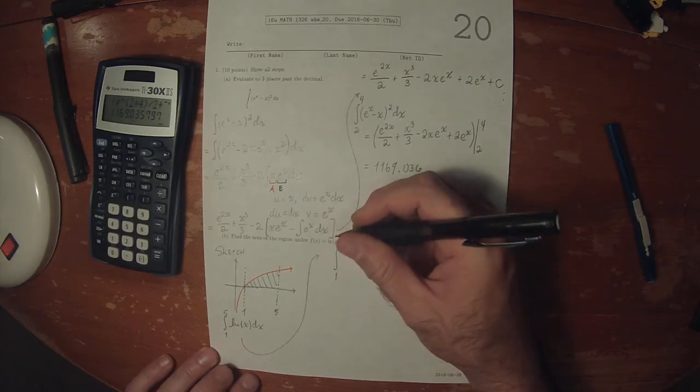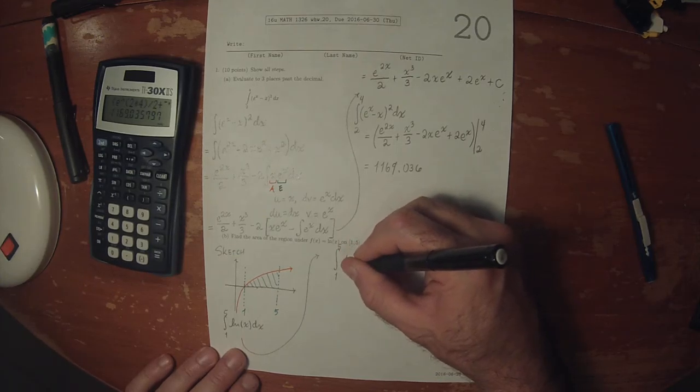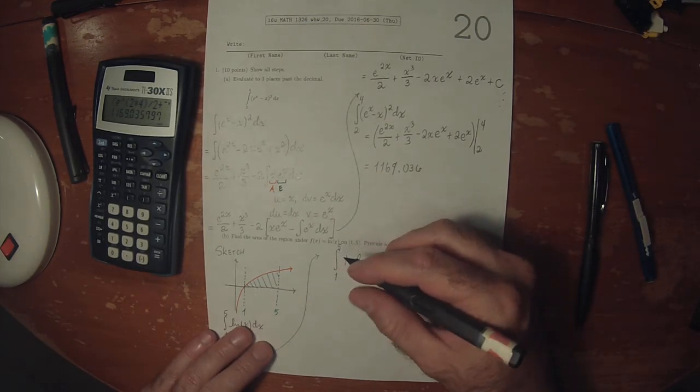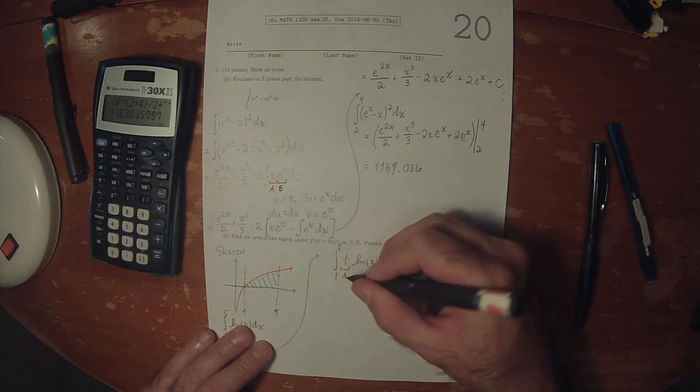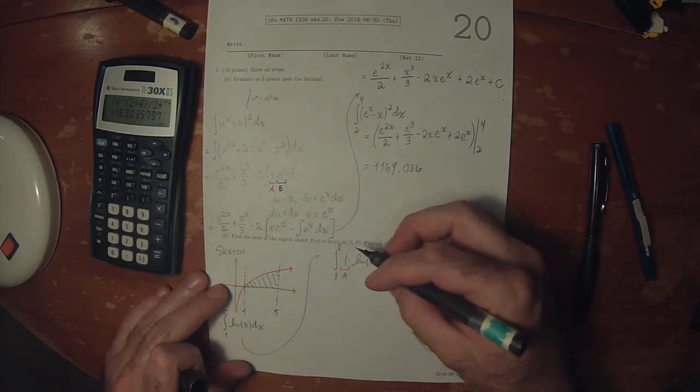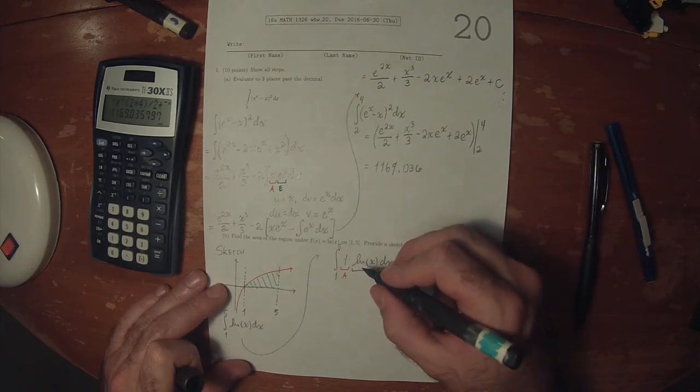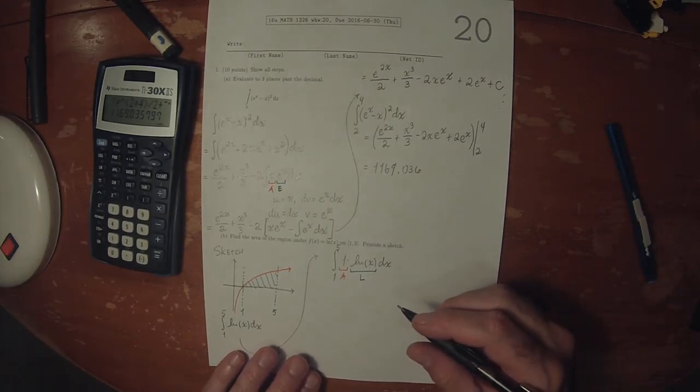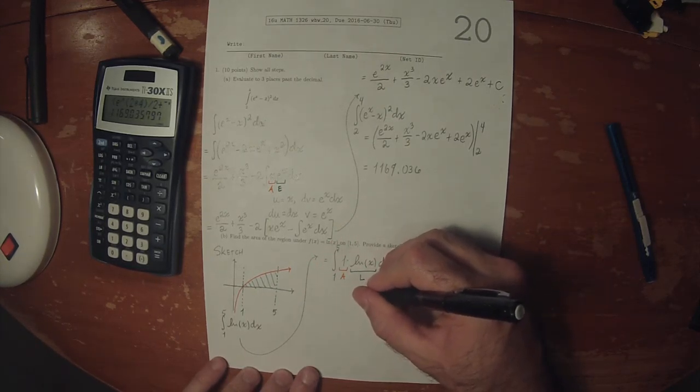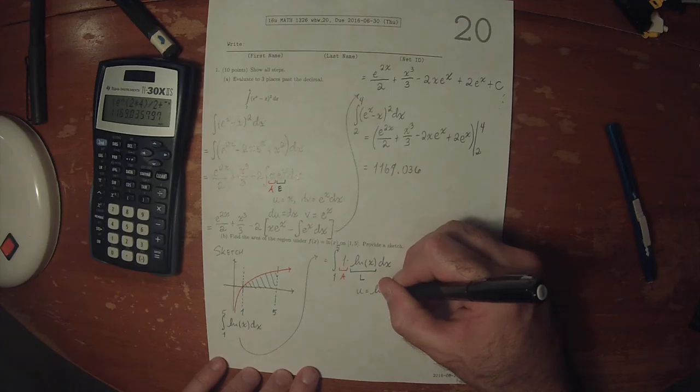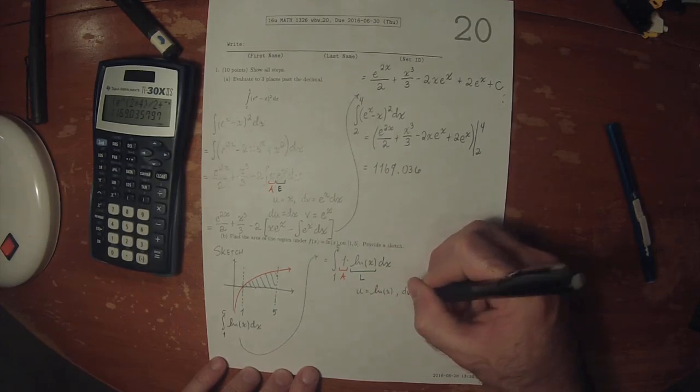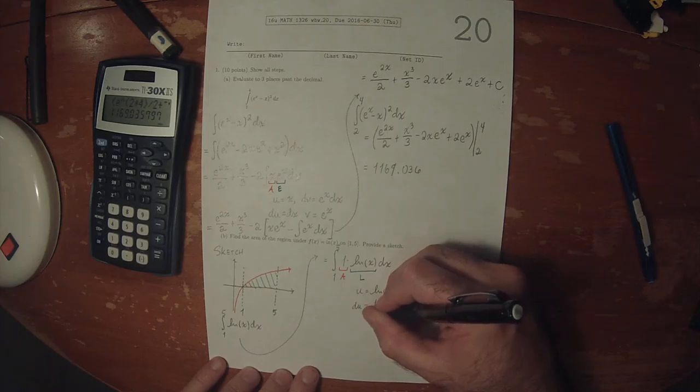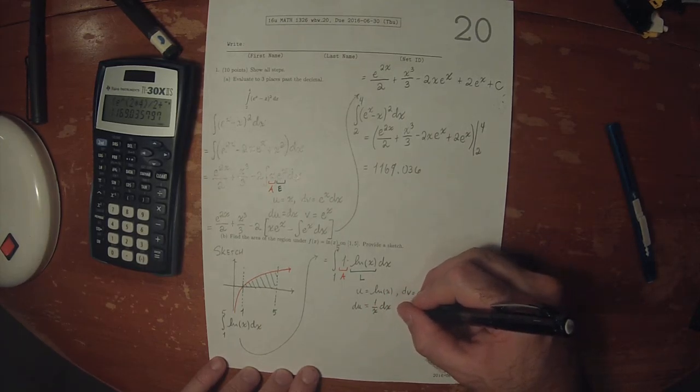So 1 to 5, and I'll write it as 1 multiplied by log of x dx. So this 1 is algebraic and this log is logarithmic. So that informs us about our choice for u. So u is the log of x, and dv is then everything else. Du is 1 over x dx, and v is x.